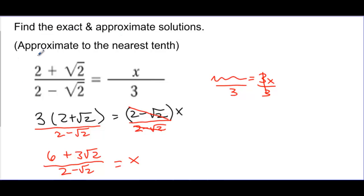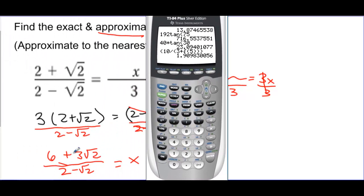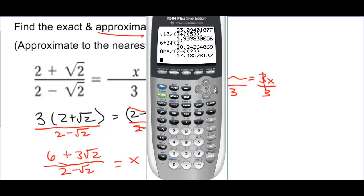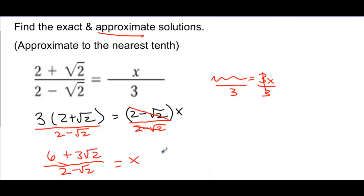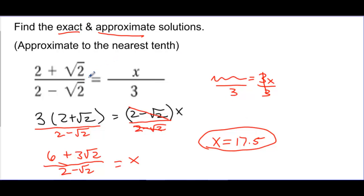The approximate solution means let's actually write out a number — we're going to evaluate the square roots instead of leaving it in radical form. Going to my calculator, I'm going to type in this expression: 6 plus 3 times the square root of 2, hit enter, then divide that by (2 minus the square root of 2). I put the bottom of the fraction in parentheses so the calculator knows that should all be together. I hit enter and it tells me about 17.5, rounded to the nearest tenth. So the approximate answer is 17.5. They also said put it in exact form, and exact form means we're not allowed to evaluate the square roots — we actually have to rationalize the denominator.